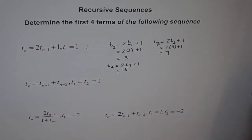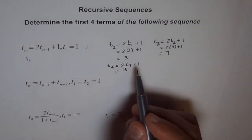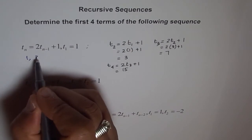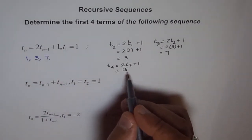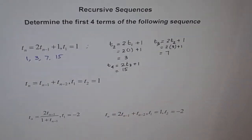Therefore, our first 4 terms are: first term is given to us as 1, second term is 3, third term is 7 and the fourth term is 15. So that is the answer for this question.